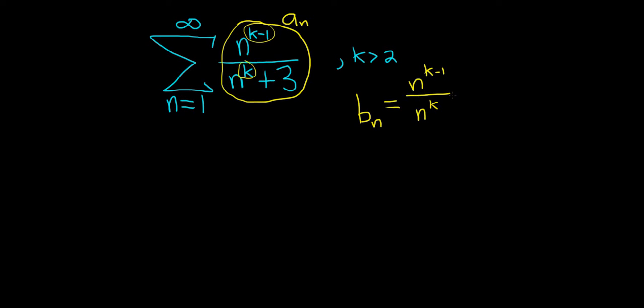Whenever you have something like this, you can use properties of exponents. The way it works is it's n to the k minus one minus k. So if you had say n to the b over n to the a, when you divide, you subtract the exponents. So in this case, it would be n to the b minus a. In this example here, your b is k minus one and your a is k. So k's cancel, and so you get n to the negative one.